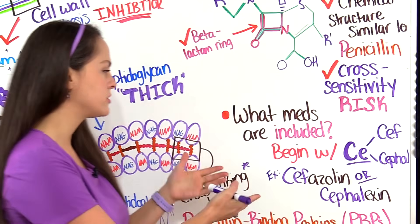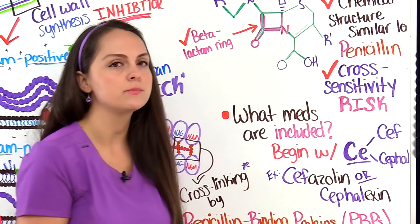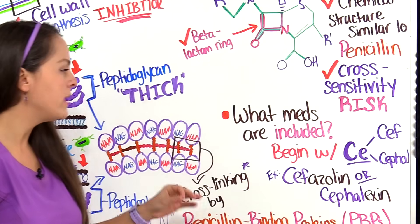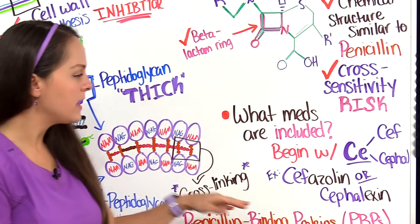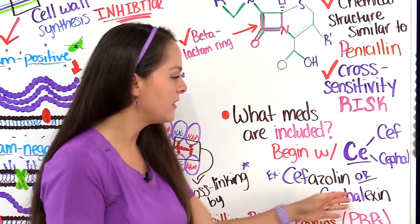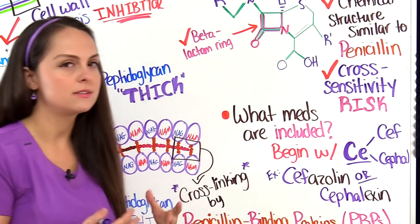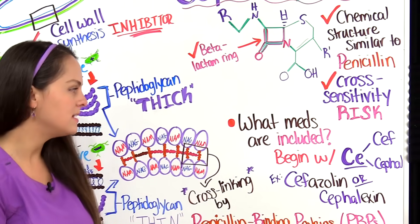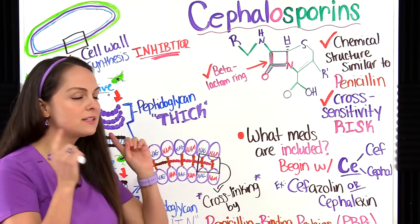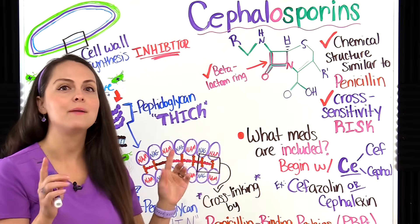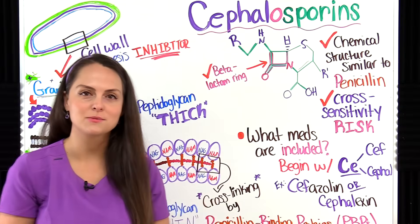Here are some first generation cephalosporins: we have cefazolin and we have cephalexin. See that C-E-F or C-E-P-H — that tells you you're dealing with a cephalosporin.